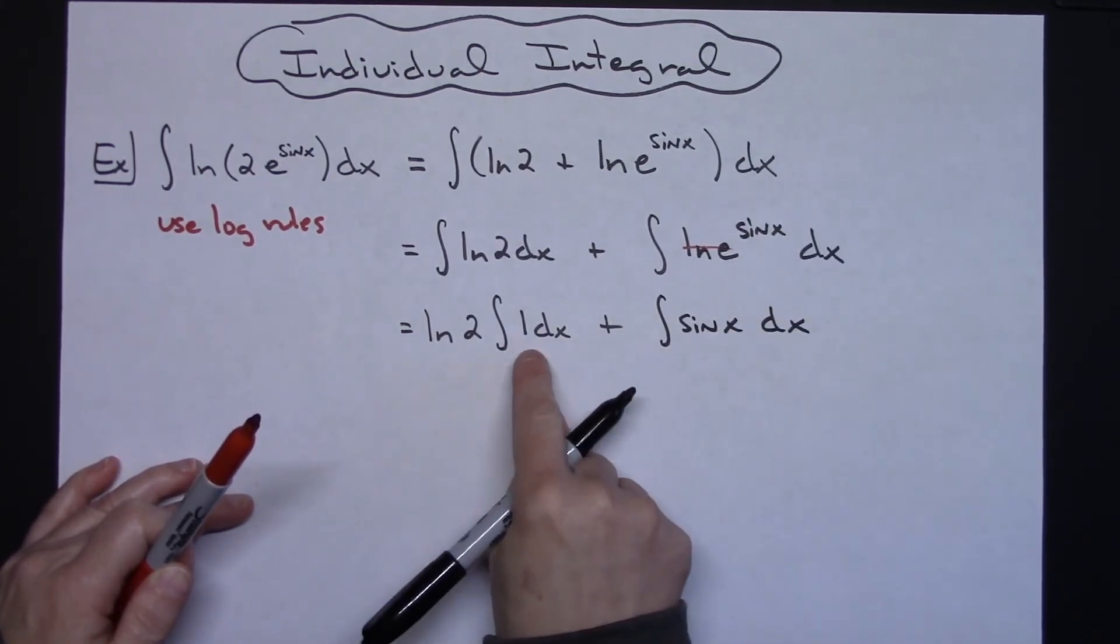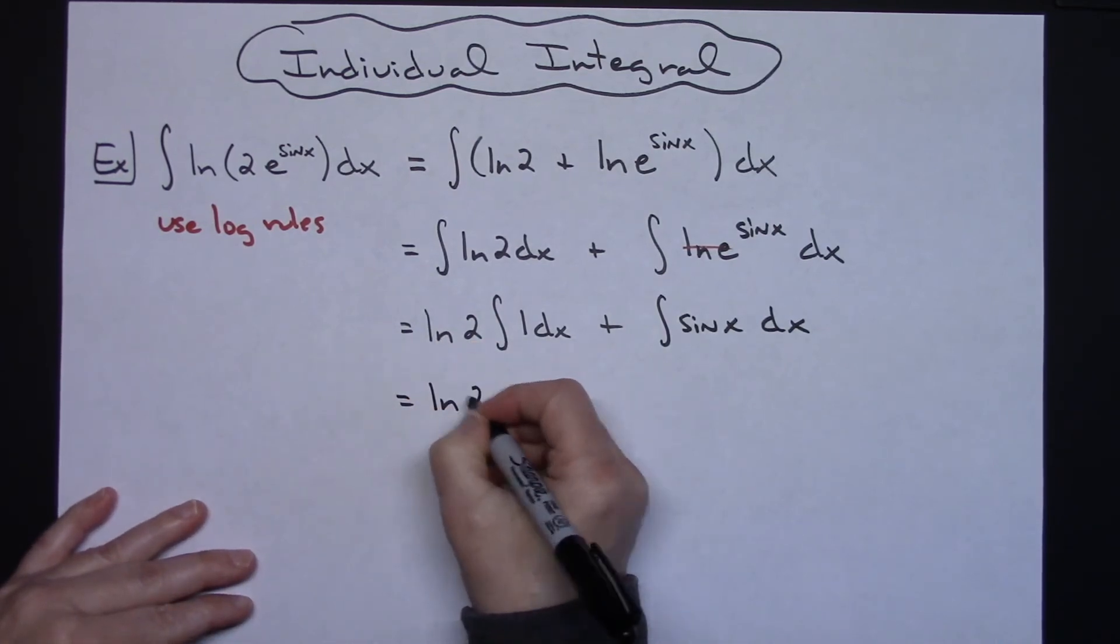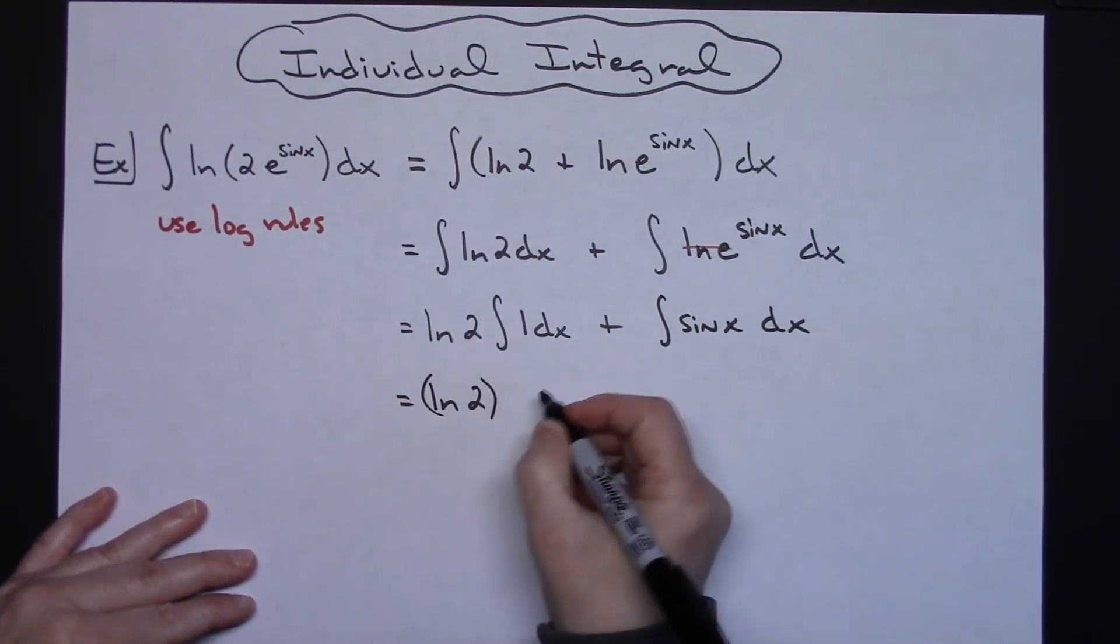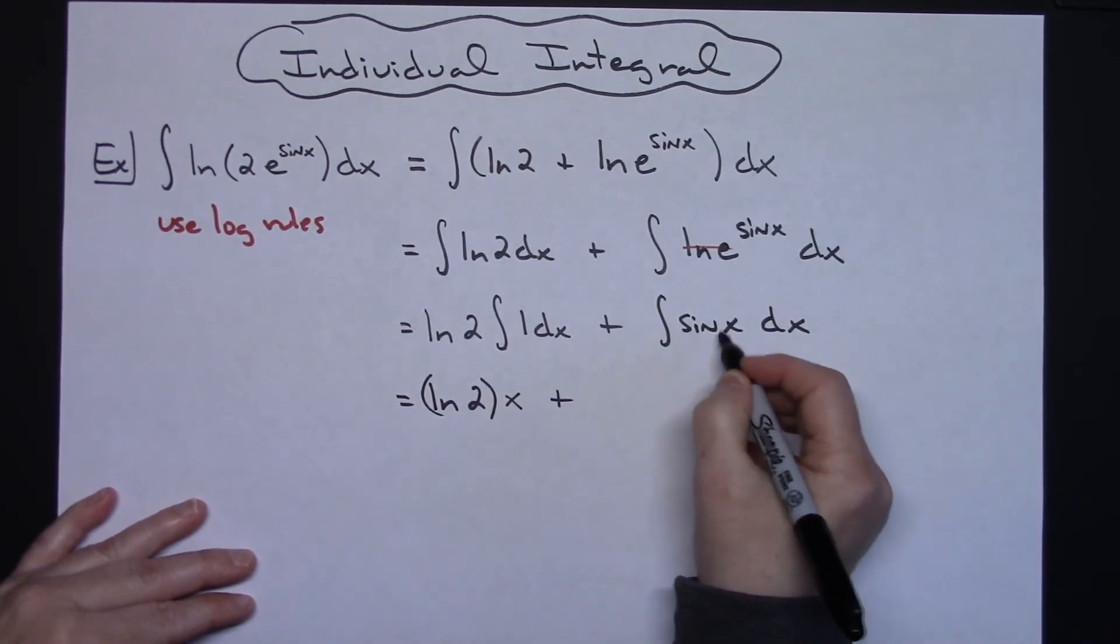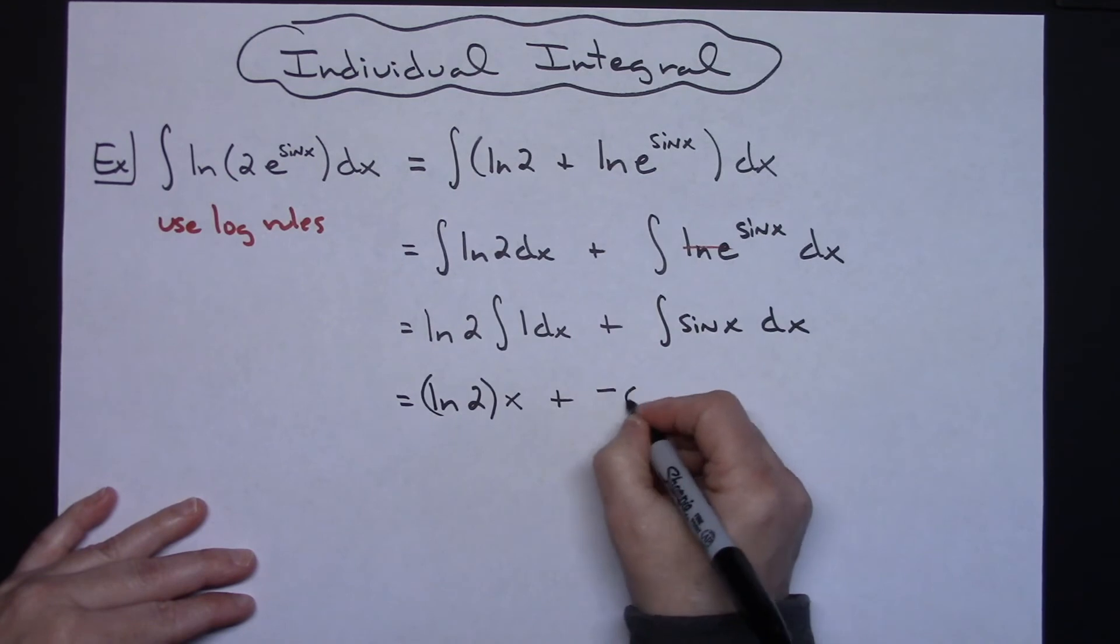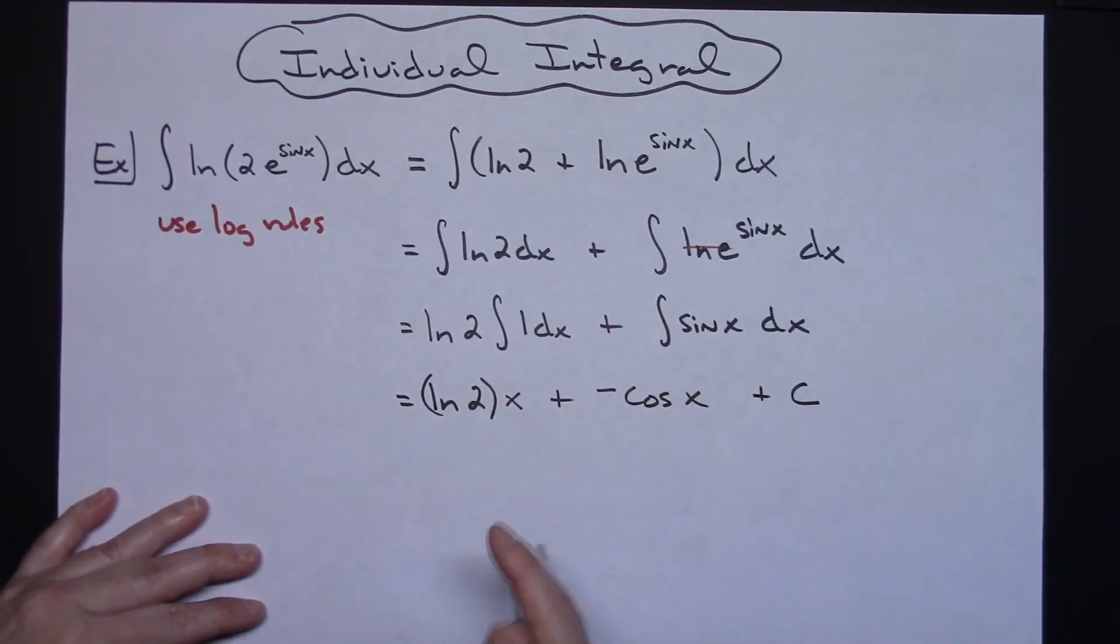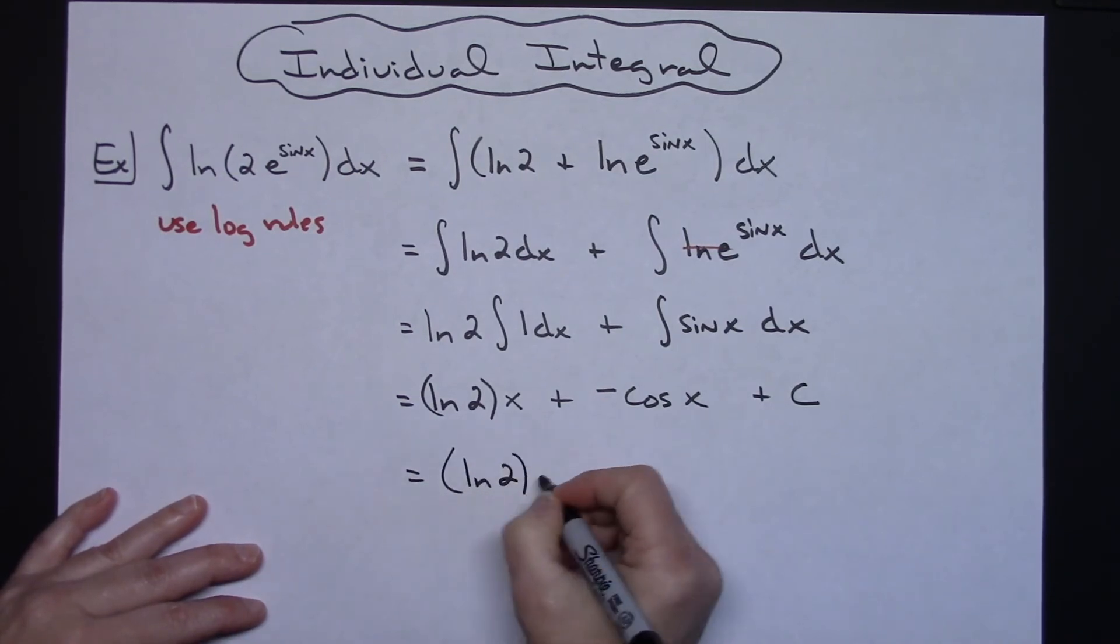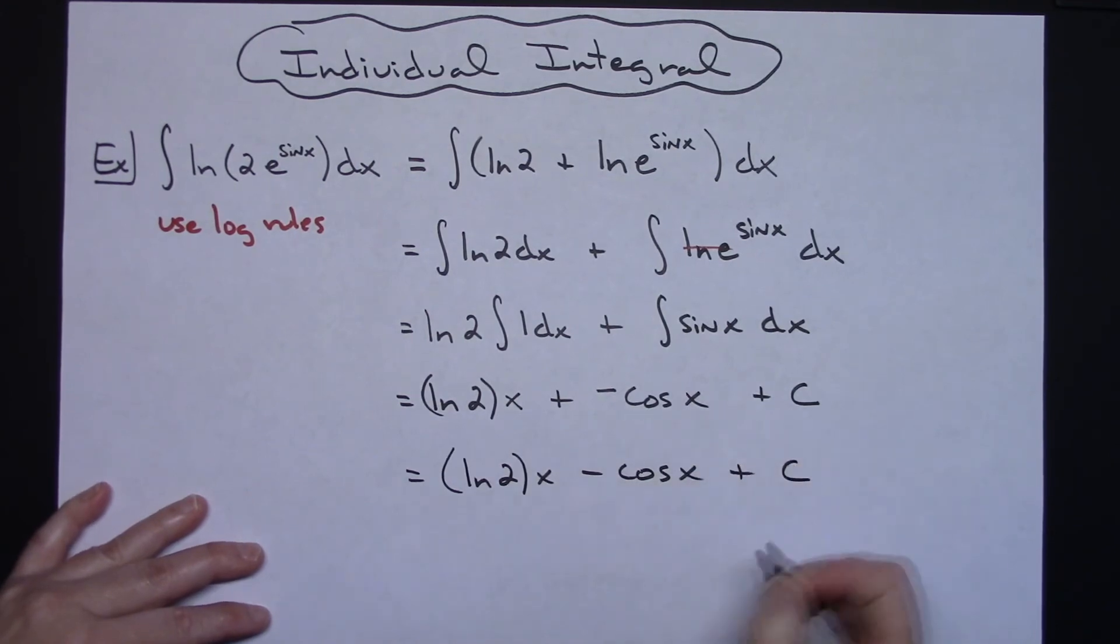Straightforward integral here. So then I'm going to have natural log of 2 integrating 1 dx will give me an x plus integrating sine will give me a negative cosine x, and then I can put that plus C on there. So let's go natural log of 2 times x minus cosine x plus C.